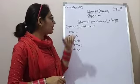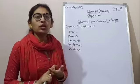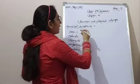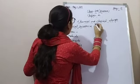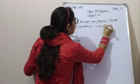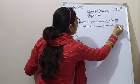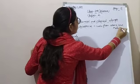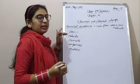Now, what is a chemical substance? Chemical substance kya hai? Chemical substances are the substances that are made from atoms and molecules — jo atom aur molecule se milke bante hain.